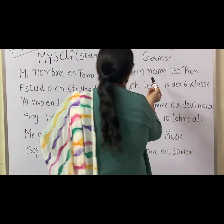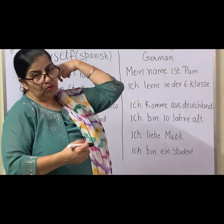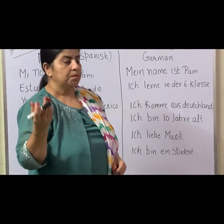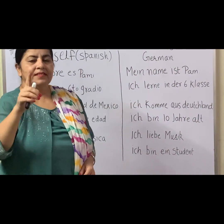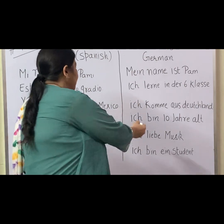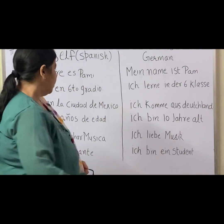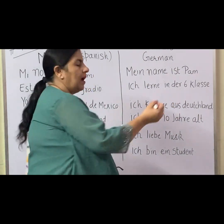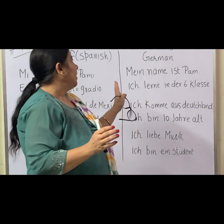Next topic is 'myself' in German. My name is Pam — Ich lerne in der 6. Klasse — I study in 6th class. Ich komme aus Deutschland — I am from Deutschland. Ich bin zehn Jahre alt — I am 10 years old. Ich liebe Musik — I love music. Ich bin ein Student — I am a student.